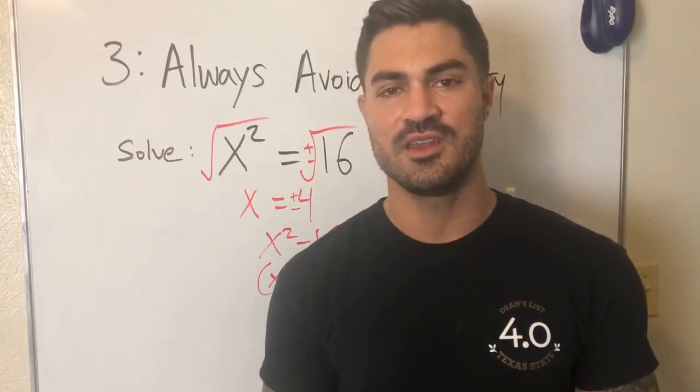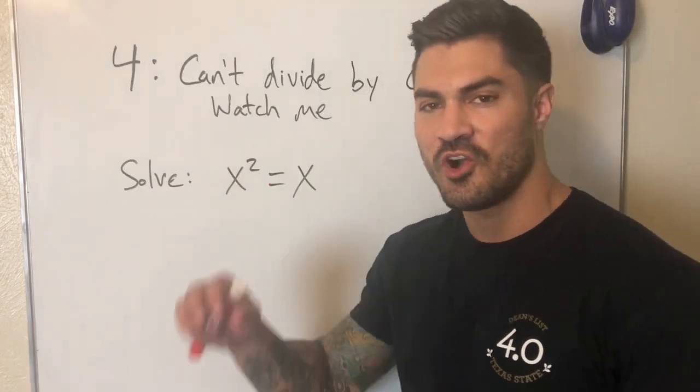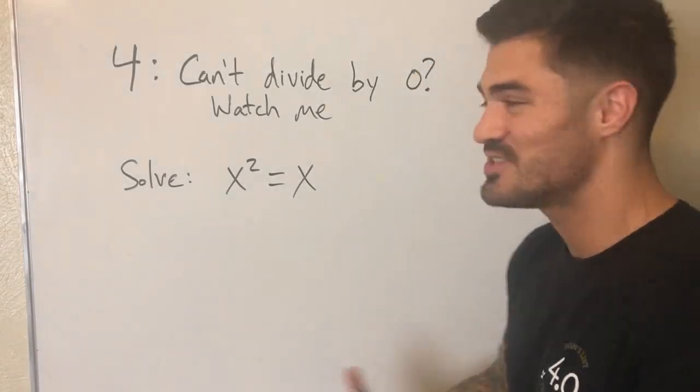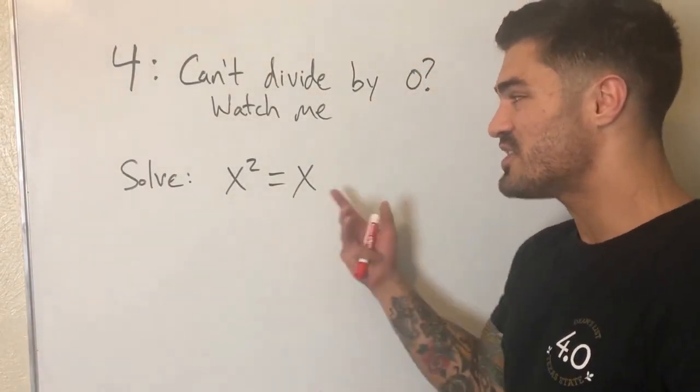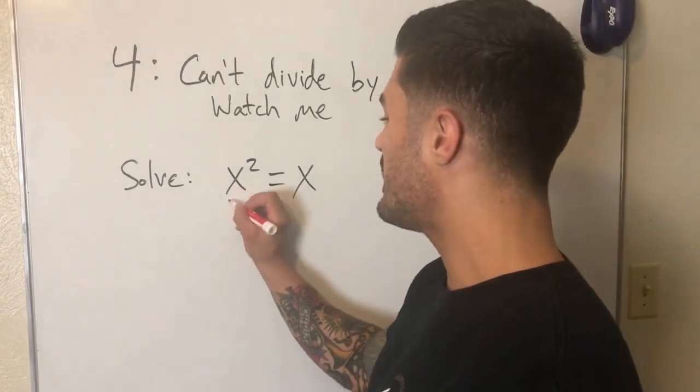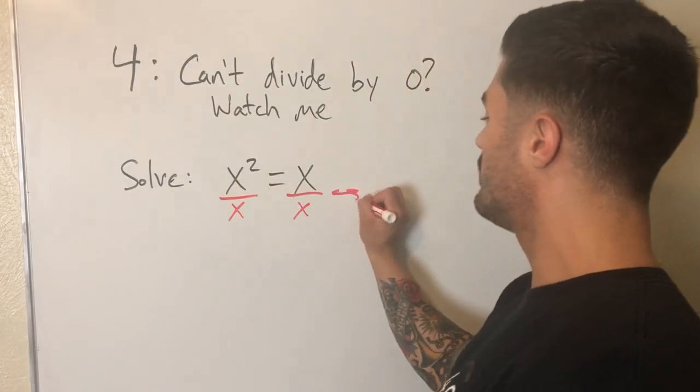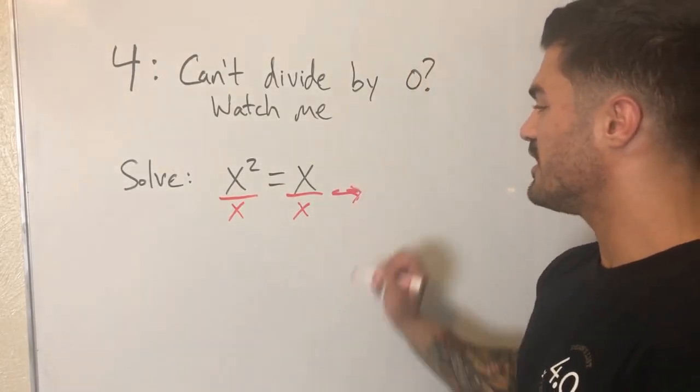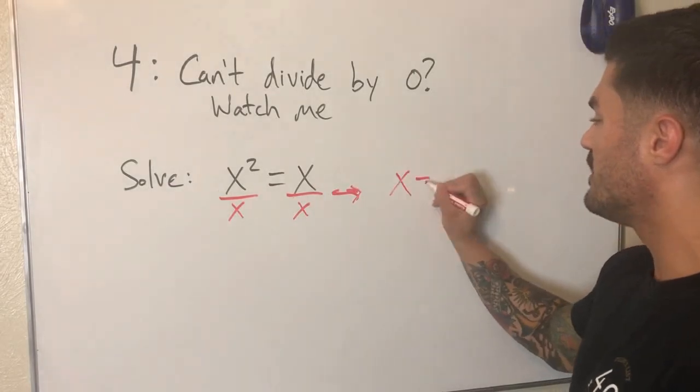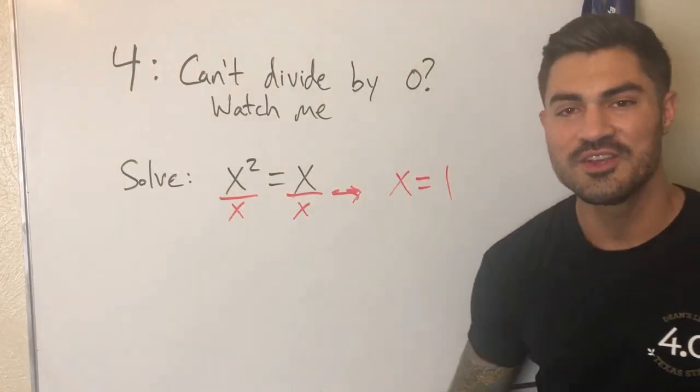Alright, mistake number four I like to call 'Can't divide by zero, watch me.' Alright, so you can probably guess what the mistake is going to be. Look, we're going to solve this: X²=X. What do I need to do? I can divide both sides by X, right? Divide by X, divide by X. Look what happens, what do I end up with? This supposed to be an arrow. What do I end up with? X² over X, that's just X, equals one, right? Wrong.